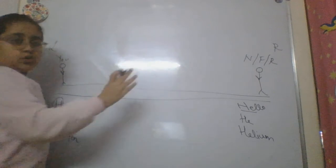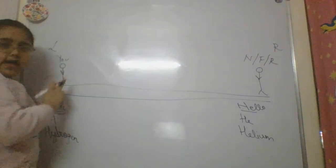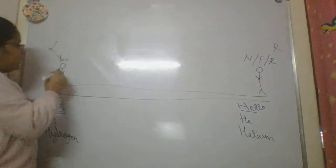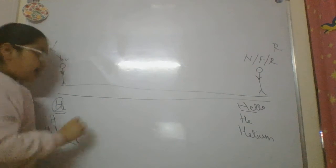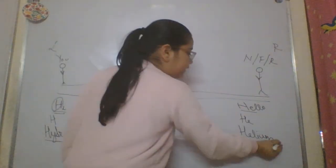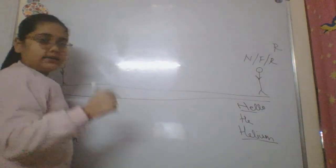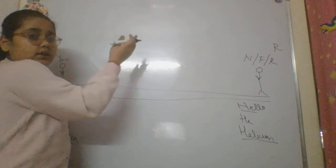Now, to the extreme left of the first period there is hydrogen and to the extreme right of the first period there is helium, right?